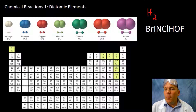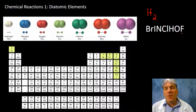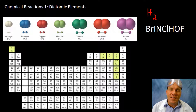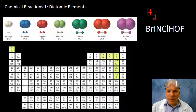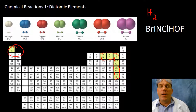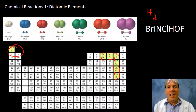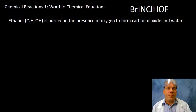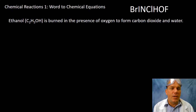BRINKELHOFF will help you remember that Bromine, Iodine, Nitrogen, Chlorine, Hydrogen, Oxygen, and Fluorine all exist in a diatomic state. It may also help to look at the periodic table — you can see a number-seven shape formed by these elements, with hydrogen as the oddball over to the side. So remember: BRINKELHOFF.